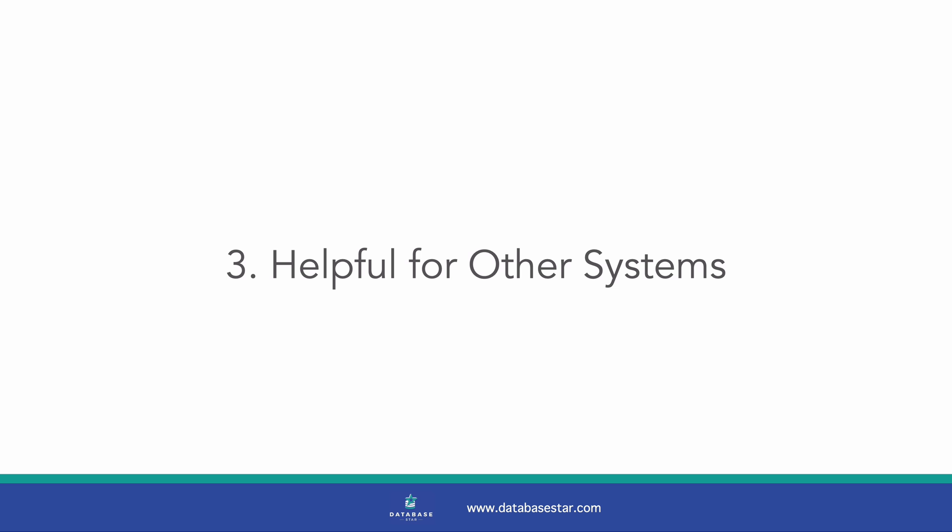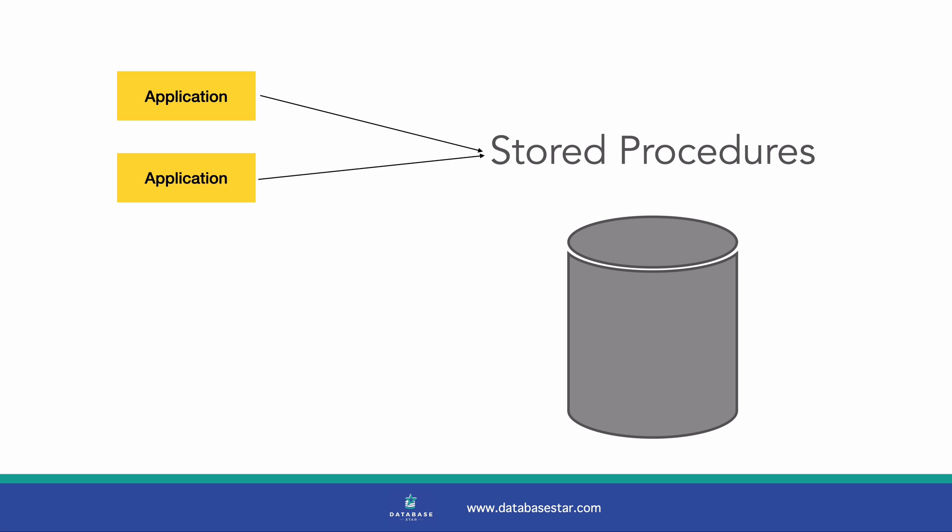If you're working in a company where more than one application needs to access a database, you may want to consider using stored procedures. If you rely on application code to run insert, update, or delete statements, there's a risk that each application would do it slightly differently, making it hard to diagnose data issues or make future changes. If you want to rename a column or table, or add new columns, you'll have to assess the impact on each system. However, if your query is in a stored procedure, the application does not care about the database's internal details — you can make changes in the stored procedure without impacting other applications. They provide their inputs and get the same responses back.